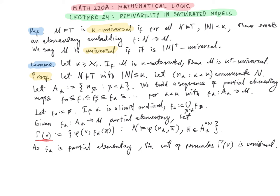The set of formulas Γ(v) is consistent with the theory of M. To see this, note that Γ(v) is closed under conjunctions by definition, since if two formulas hold on N_α then the conjunction also holds. So it suffices to show that each formula in Γ is consistent. If N satisfies φ(N_α, ā), then N satisfies ∃v φ(v, ā), and since F_α is partial elementary, M satisfies ∃v φ(v, F_α(ā)), so φ(v, F_α(ā)) is satisfiable in M.